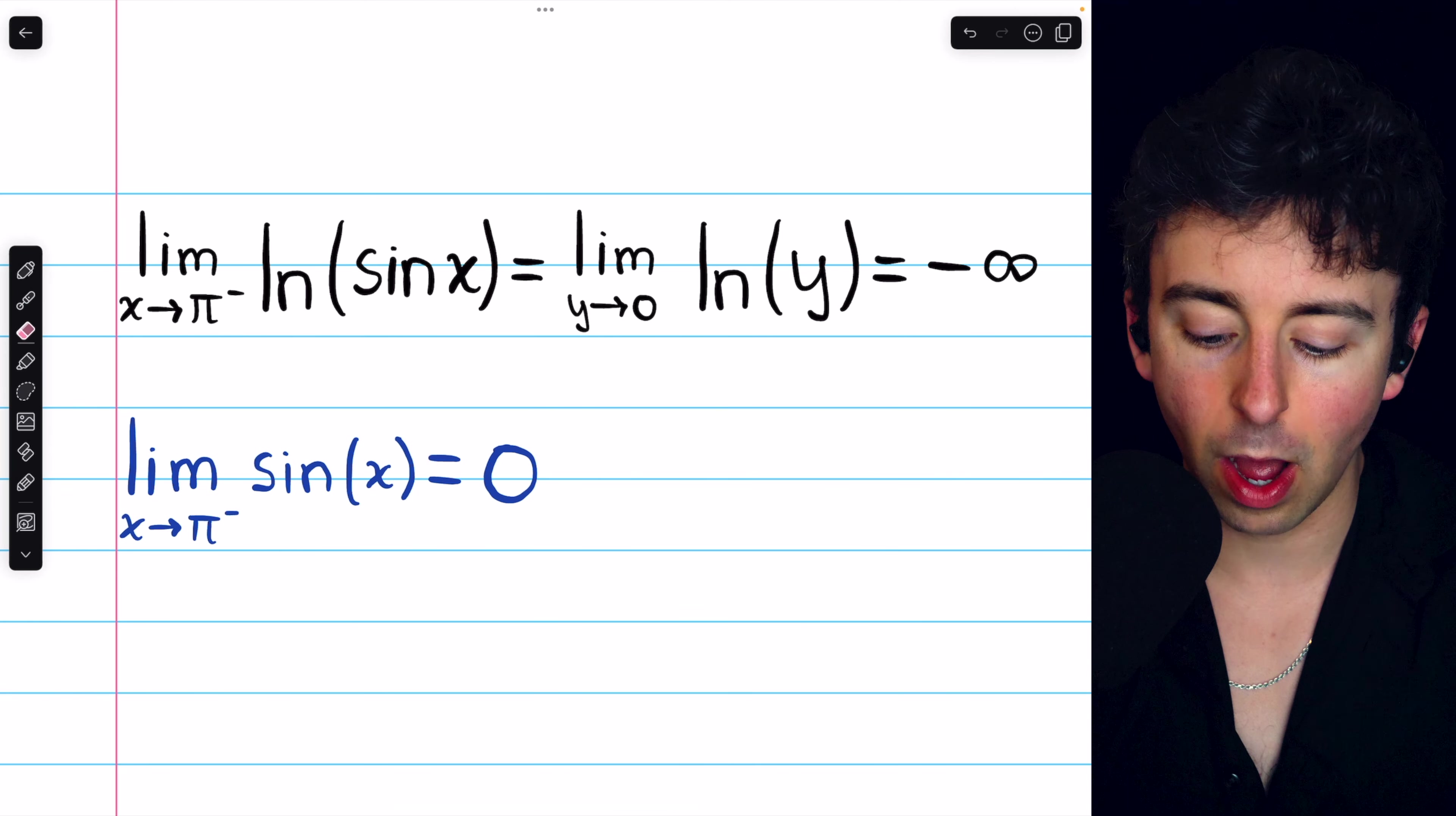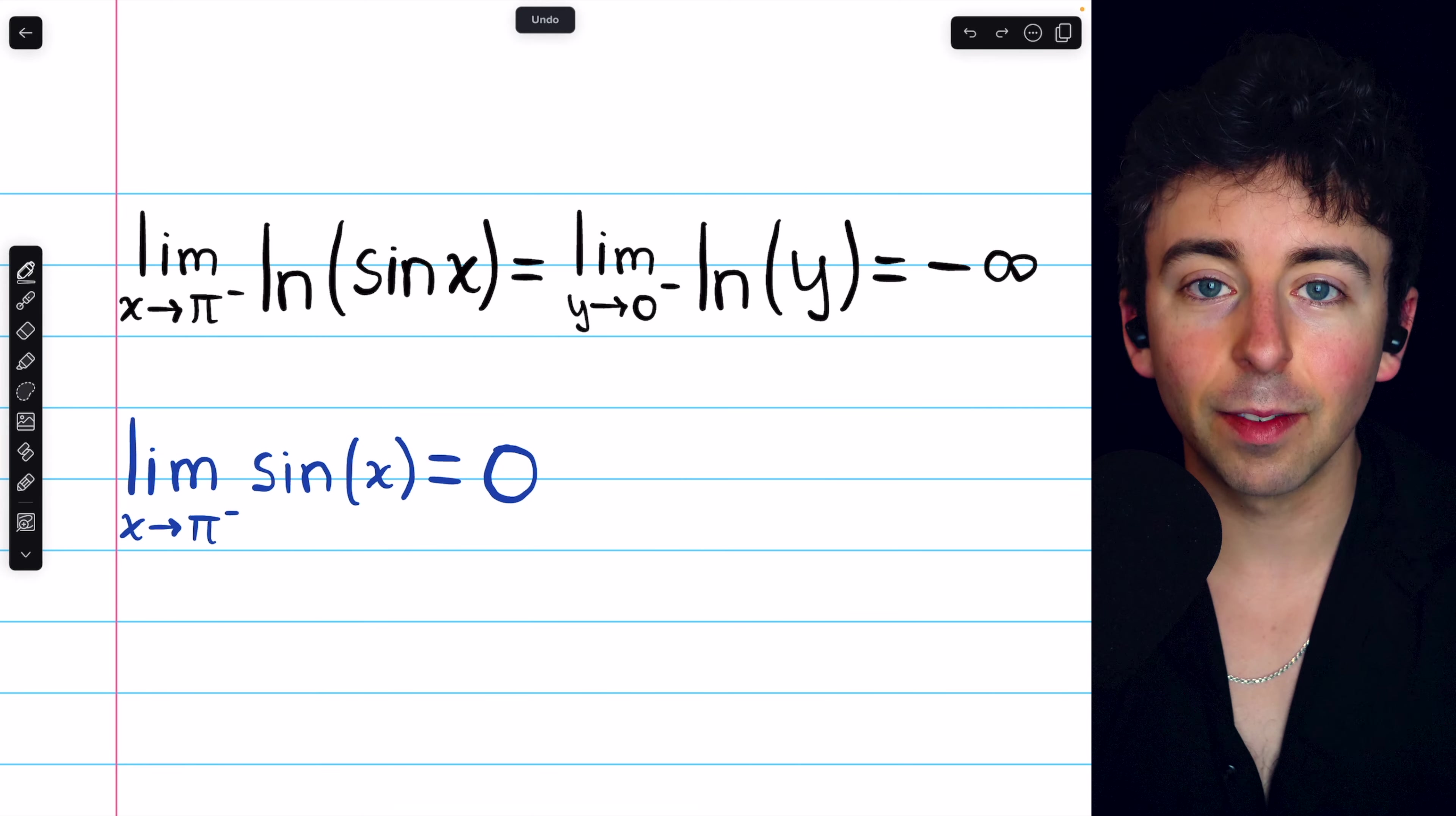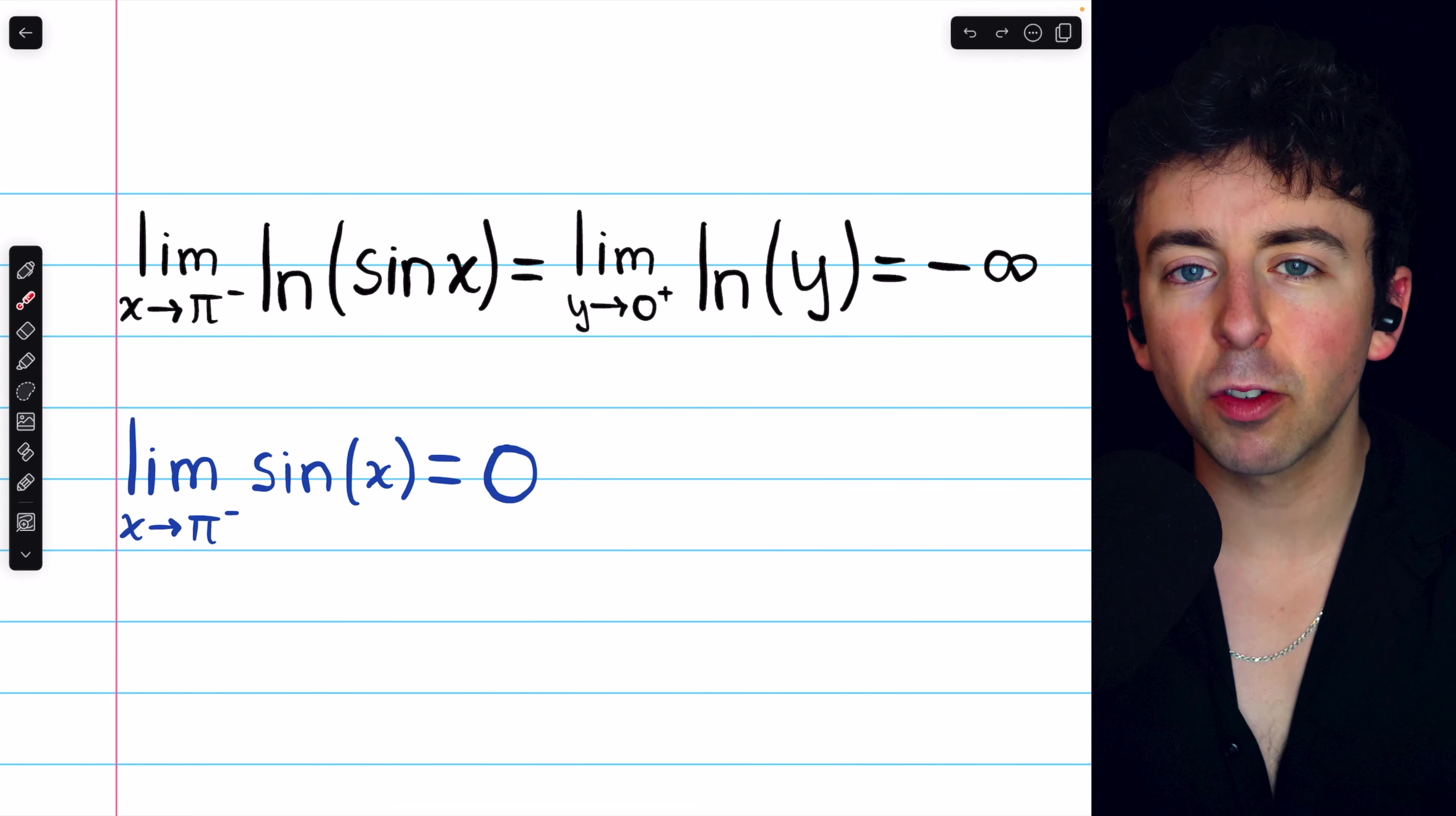Keep in mind also, if you had screwed up this part where we change the variable, for example, if you had accidentally put y approaching zero from the left, that wouldn't make sense because y approaching zero from the left means that y is negative and the natural log of negatives is not defined.